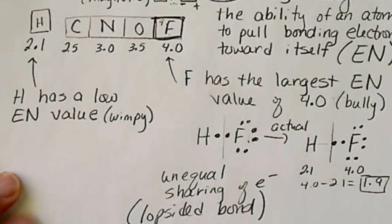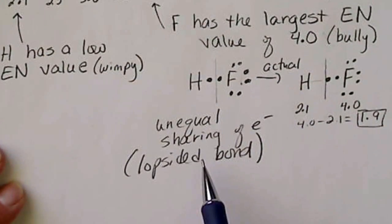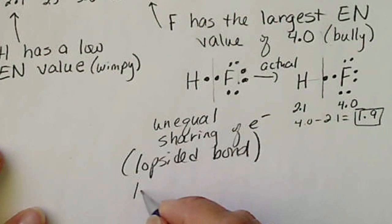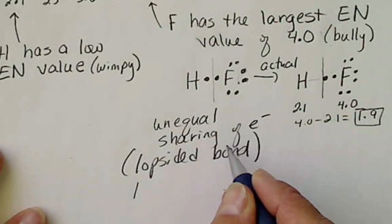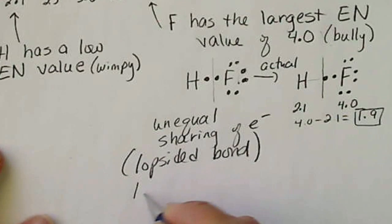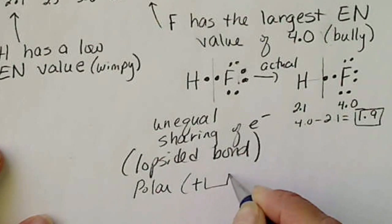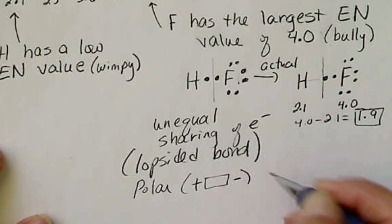Because electrons are negative, we have a lopsided bond, or really we have an uneven distribution of electrons. So we end up with a polar, which is a positive-negative bond.